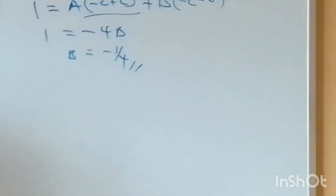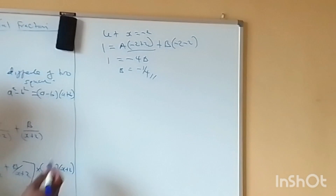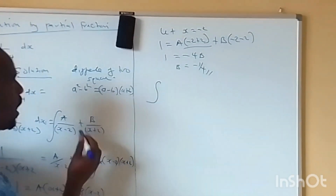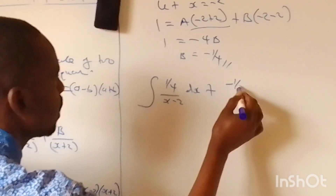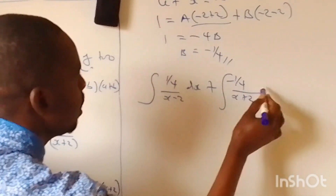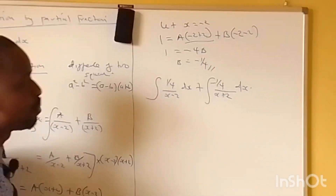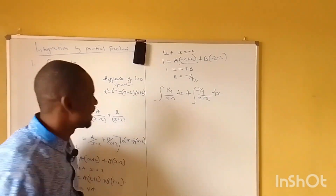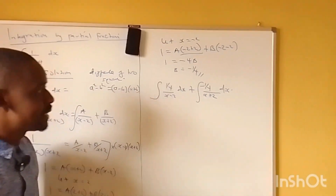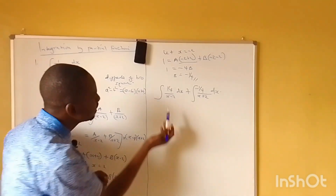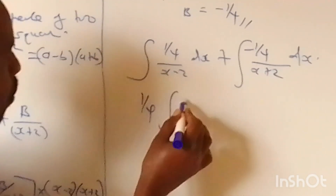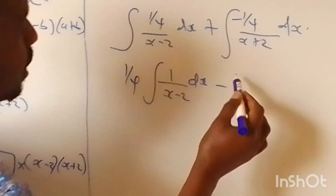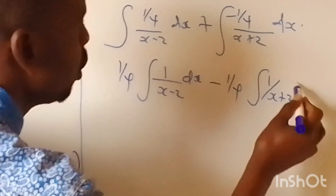After finding A and B, we substitute back. We now have the integral of (one quarter) over (x minus 2) dx plus the integral of (negative one quarter) over (x plus 2) dx. We can take the constants outside: one quarter times the integral of 1 over (x minus 2) dx, minus one quarter times the integral of 1 over (x plus 2) dx.